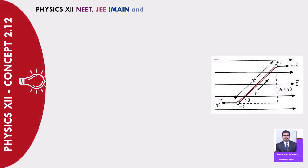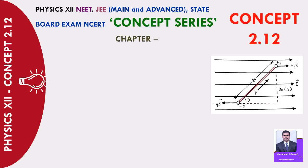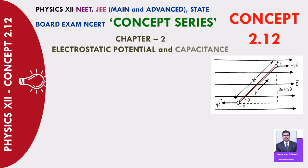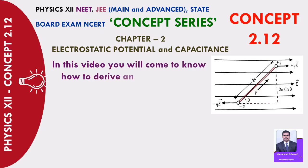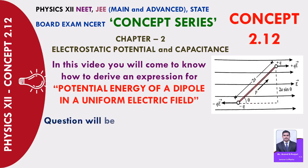Physics 12 NEET, JEE Main and Advanced, State Board Exam — NCERT Concept Series, Concept 2.12, Chapter 2: Electrostatic Potential and Capacitance. In this video you will come to know how to derive an expression for potential energy of a dipole in a uniform electric field.